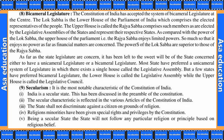As far as state legislatures are concerned, it has been left to the will of the state concerned whether to have a unicameral or a bicameral legislature. Most states have preferred a unicameral system of legislature, in which there exists a single house called a legislative assembly. But a few states have preferred a bicameral legislature, where the lower house is called the legislative assembly and the upper house is called the legislative council.